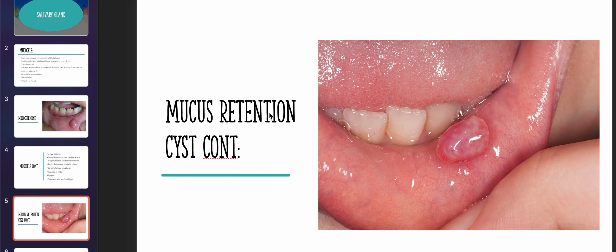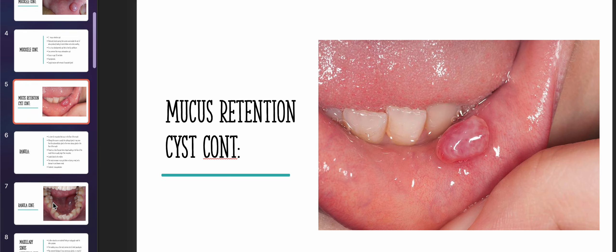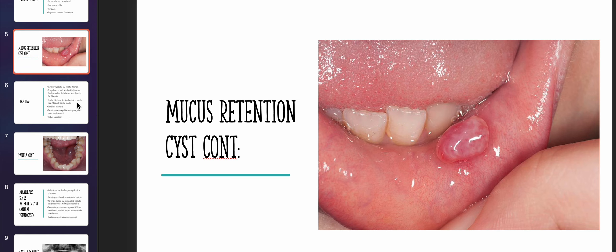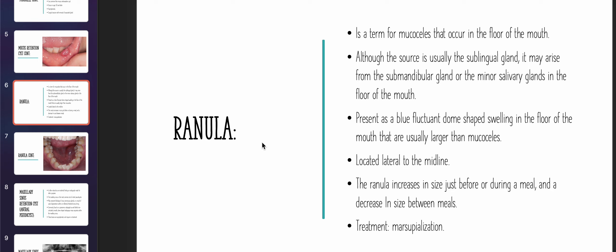Mucus retention cyst is asymptomatic; surgical excision with removal of the associated gland is the treatment. Now the second topic is ranula. There are lots of questions in the INBDE exam about ranula. A ranula is a mucocele but it occurs in the floor of the mouth. The source is usually the sublingual gland, but it may arise from the submandibular gland or other minor salivary glands in the floor of the mouth. It presents as a blue fluctuant dome-shaped swelling that is usually larger than a mucocele.